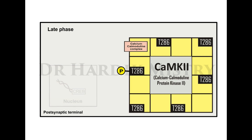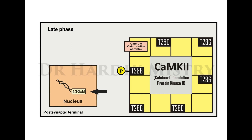Late phase events are responsible for long-term memory. CaMKII activates CREB (cAMP response element binding protein) in the nucleus, inducing transcription. New AMPA receptors are formed and placed at the post-synaptic membrane.